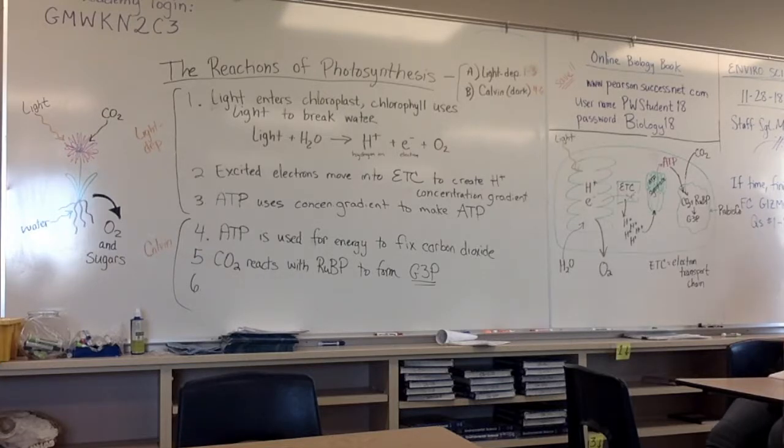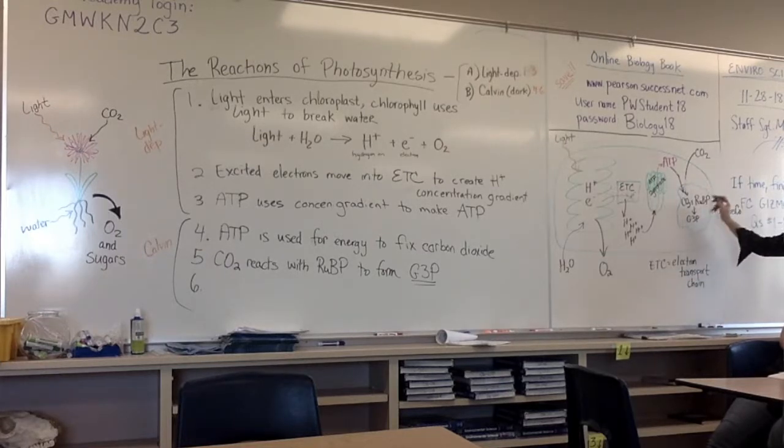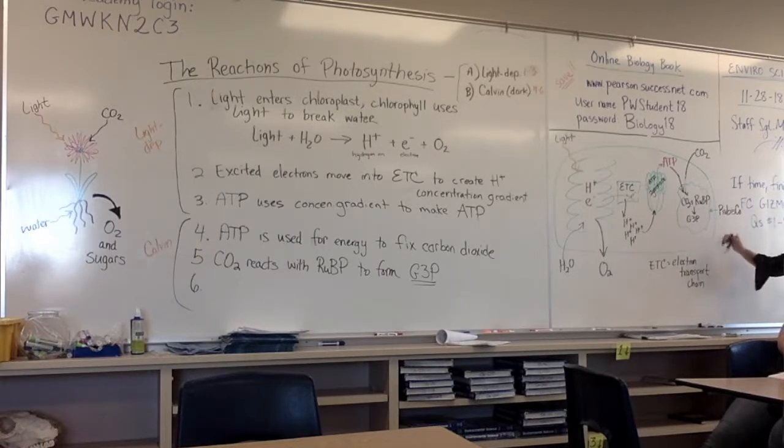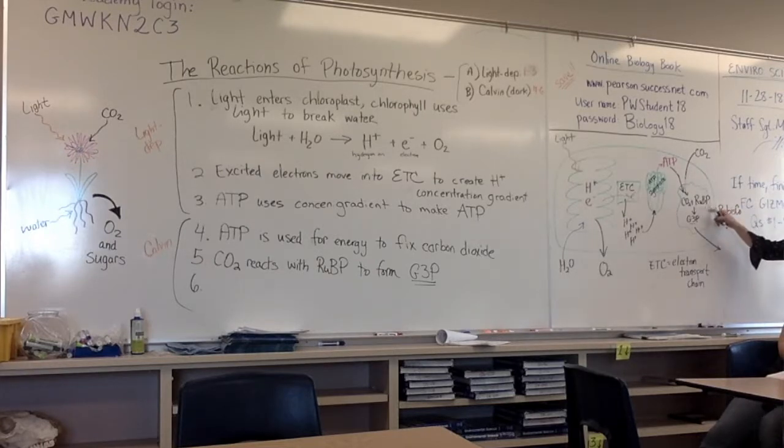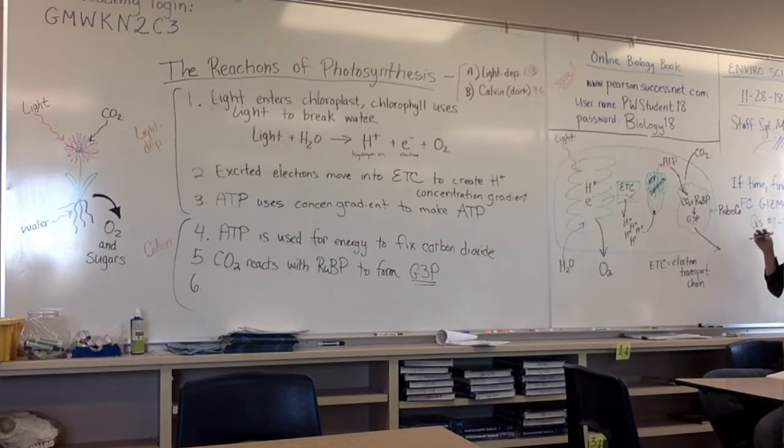So, in the second half, in the Calvin cycle, the dark reactions, the light independent, carbon dioxide comes in through the stroma. ATP from the previous cycle comes in. Rubisco is an enzyme that makes all of this happen. Carbon dioxide is fixed with RubP to make G3P. All we need to know is these abbreviations. We don't need to know at all what they stand for.